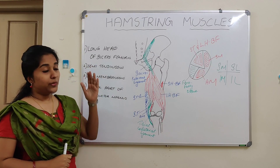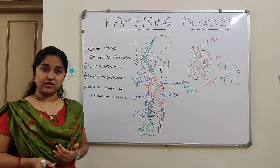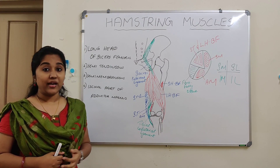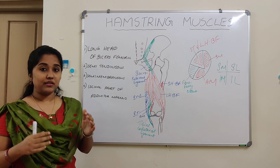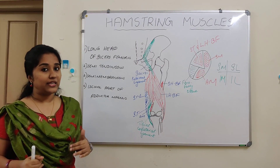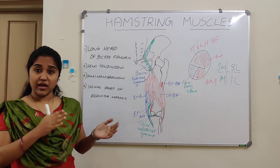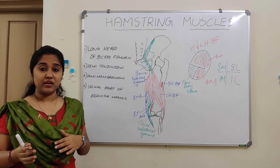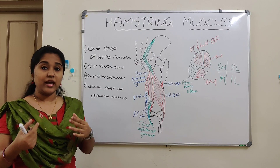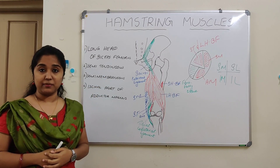What do we mean by hamstring muscles and where are they located? The hamstring muscles are present at the back of the thigh — they are a group of muscles present between the hip and the knee. The name 'hamstring' came because the tendons of these muscles were used to hang hams like a string, and that is why the name hamstring came.